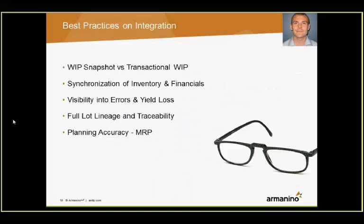The key to making this all work is understanding that it isn't effective to just take a WIP snapshot of where inventory balances are in the chain. You really need to think more in terms of transactional work in process — being able to understand starts and stops, work instructions, where you're at in the cycle, shipments and receipts, as opposed to just snapshots. In doing all that, you're able to synchronize your inventory and financials, get visibility into your errors and yield loss, and track the full lot lineage and traceability of products as they go through the production cycle.